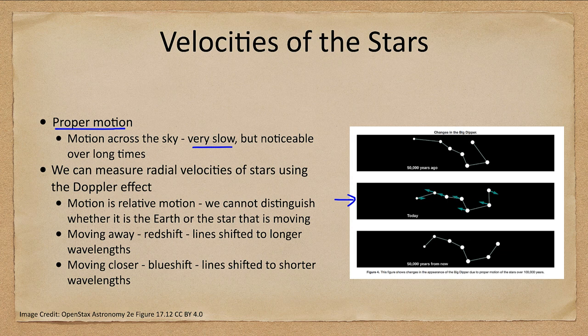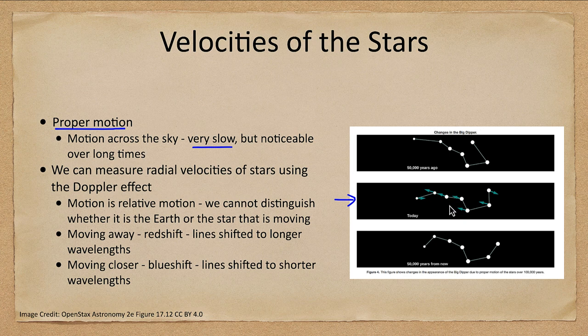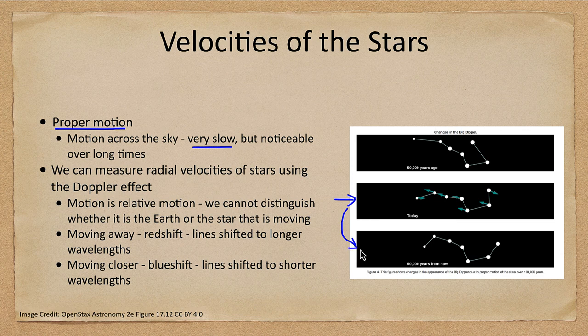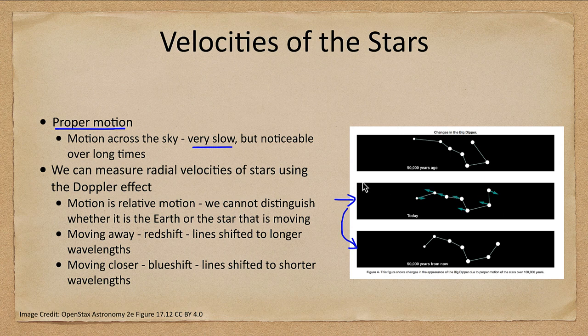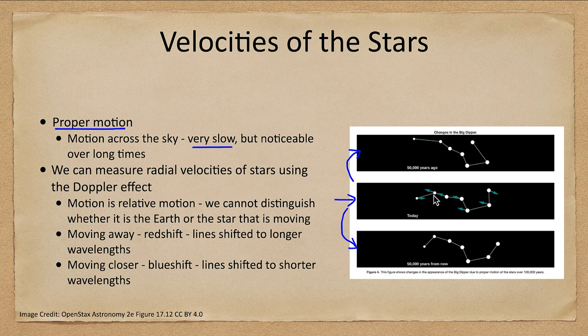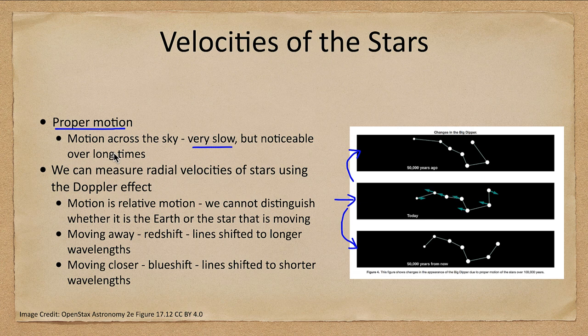Will they look any different next week or next month or even next year? No. Even a hundred years from now, they'll barely have changed. But 50,000 years from now, those slow motions add up and we would see that the Dipper would look a little more distorted from what we're used to looking at today. We can trace that back and see what the Dipper would have looked like 50,000 years before. It's a very slow motion because the stars are so far away.